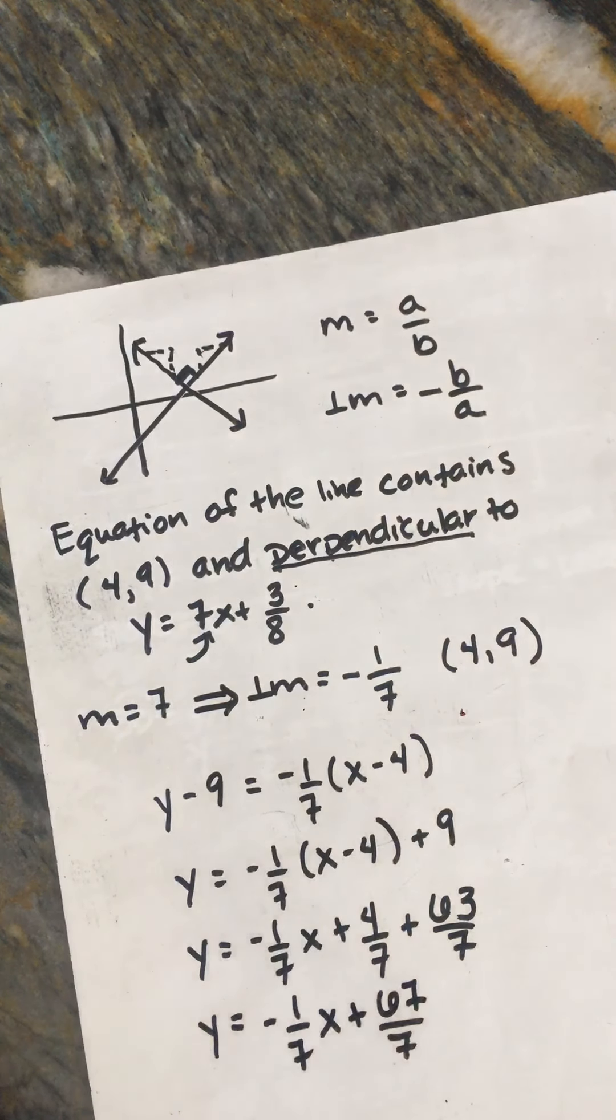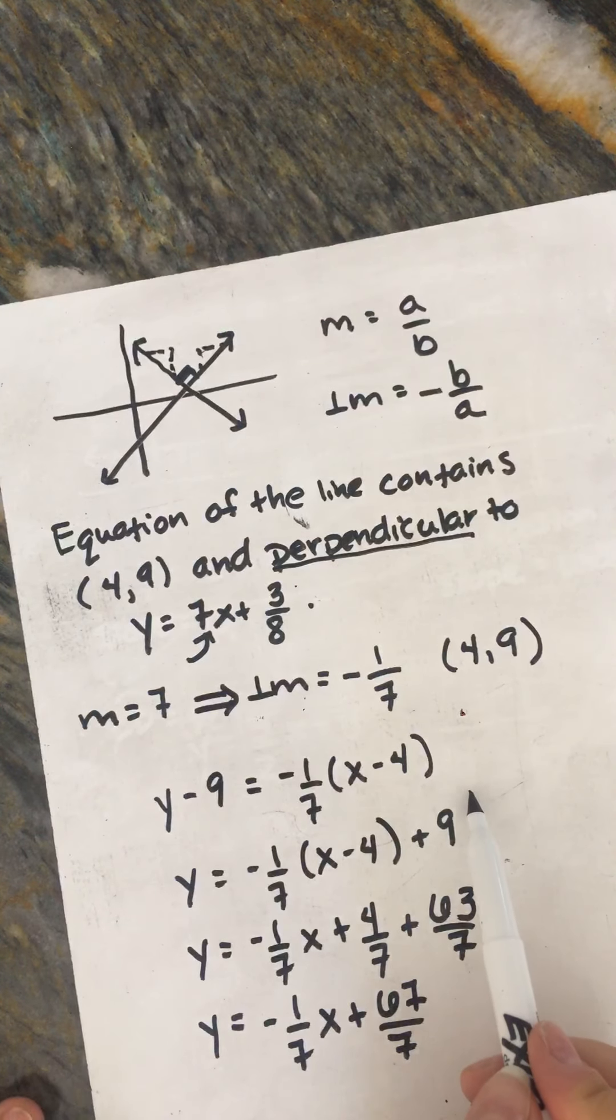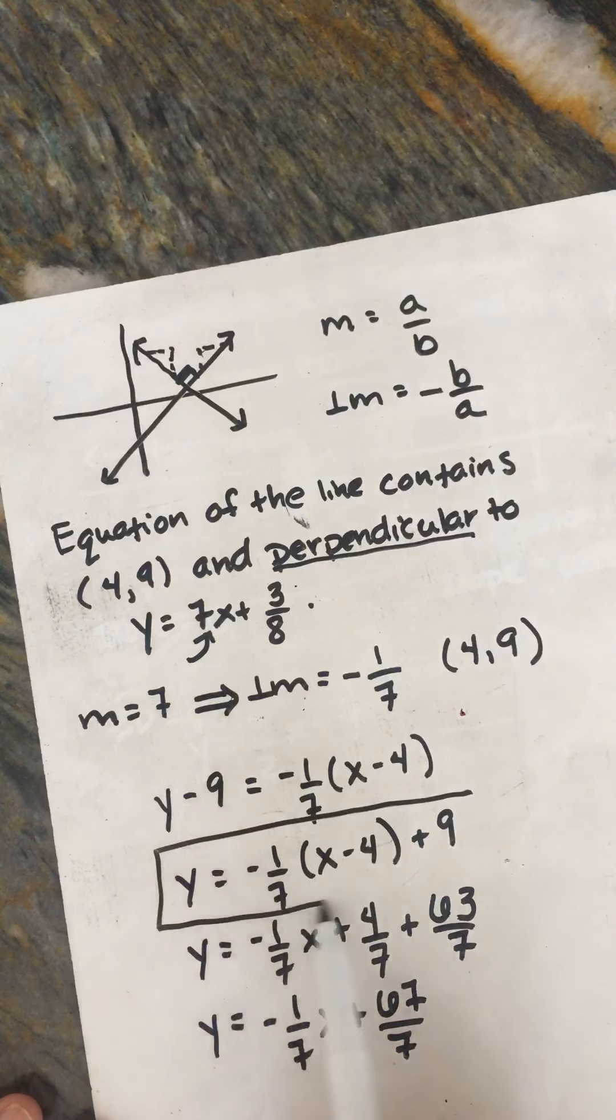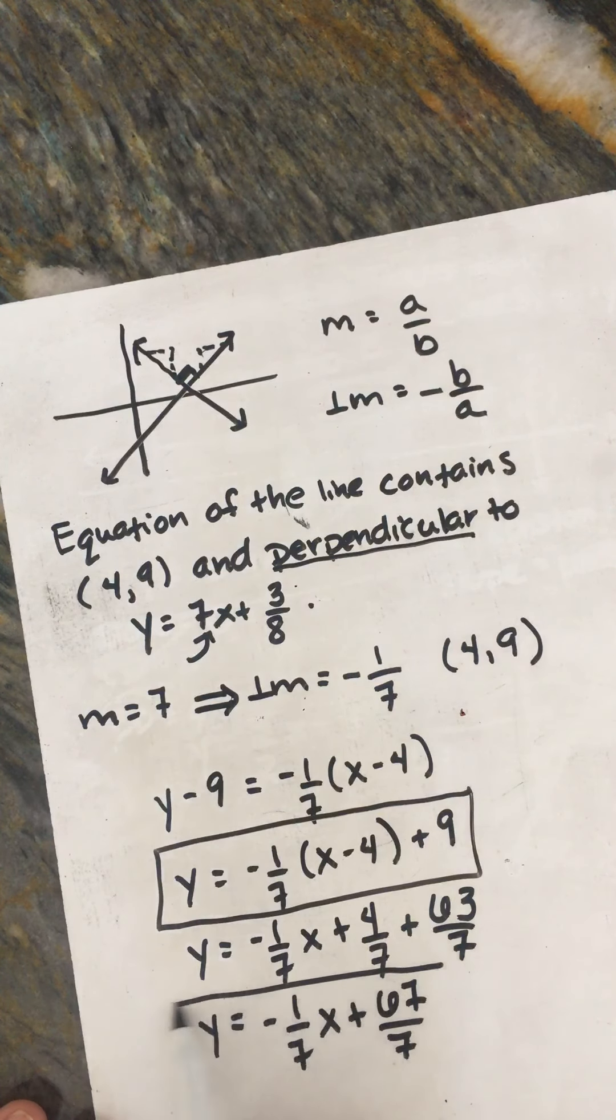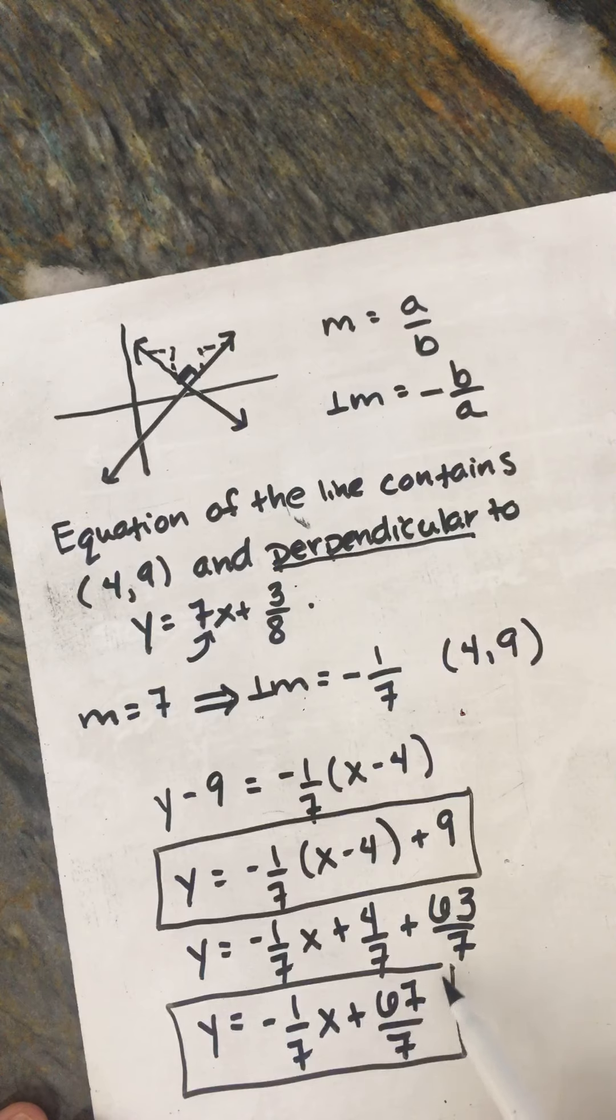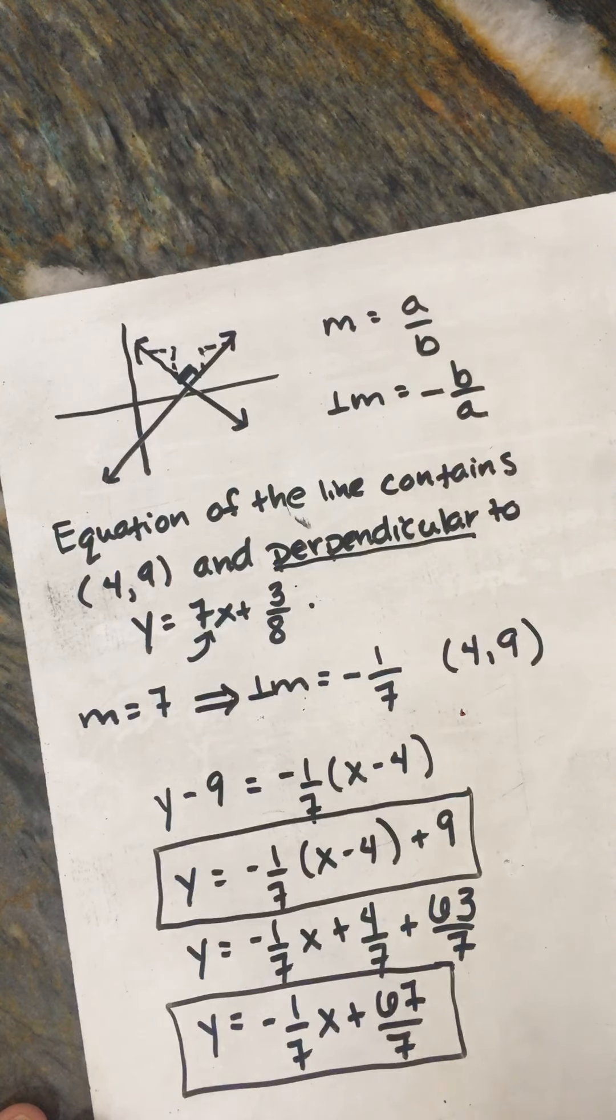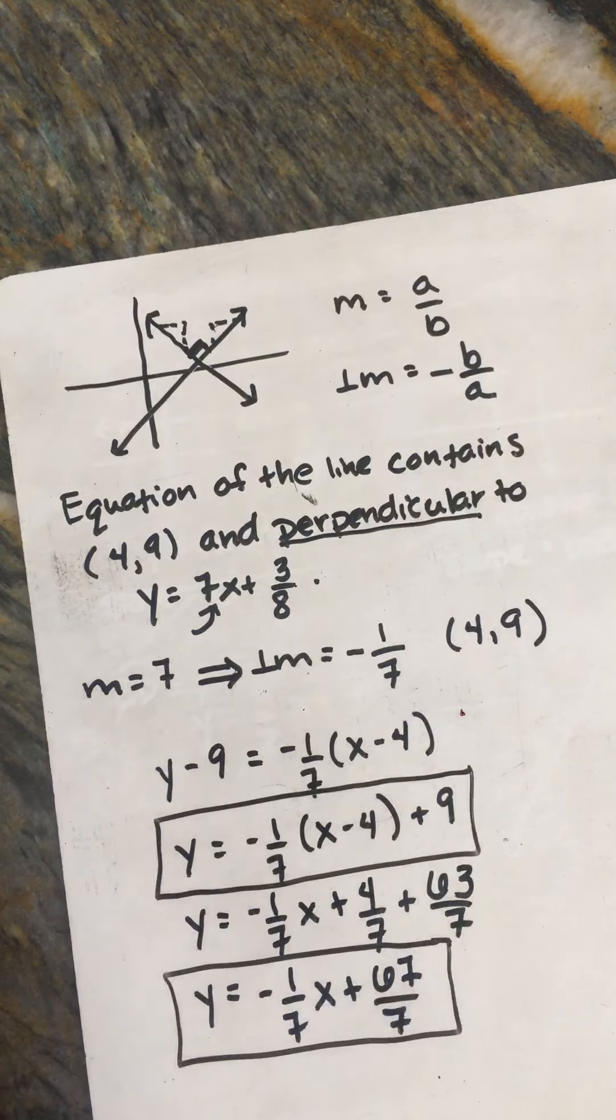So there we go. You have your point-slope version of the line and the slope-intercept version of the line. In Algebra 2, we will work with the slope-intercept version a lot. All right. Give some of these a try.